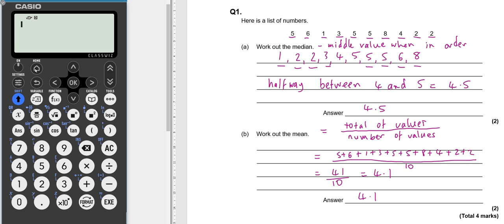Press the home button and then across to statistics, the OK button, and we want just one variable so we'll just OK on there.